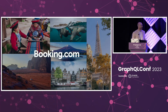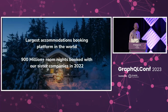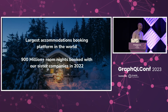Now, since we're at an American-based conference, and Booking.com's presence here in America isn't as large as it is in the rest of the world, if you're unfamiliar with us, we are the largest accommodations platform in the world. Between us and our sister companies, we do over 900 million room nights booked a year. And that was just last year alone, and this year it's going to be even more.